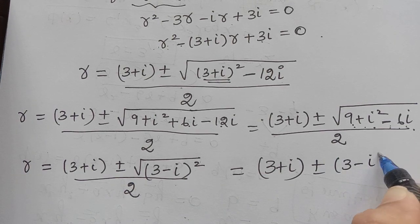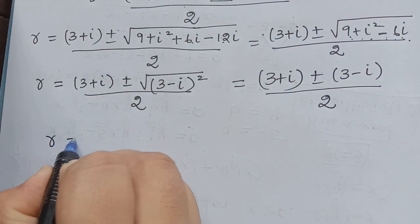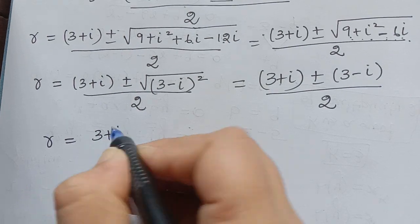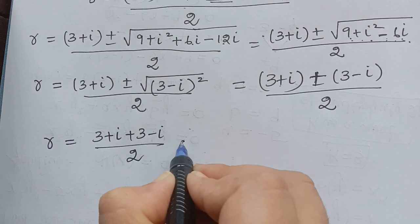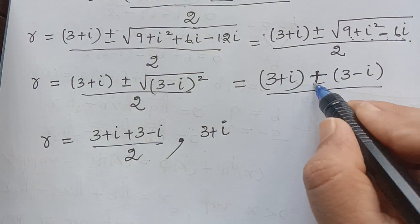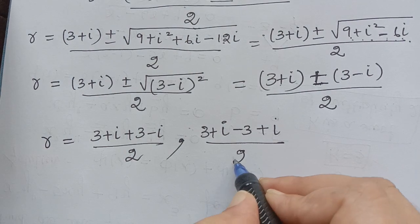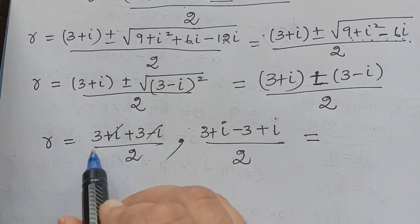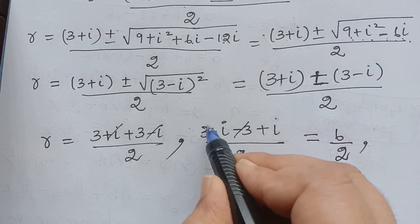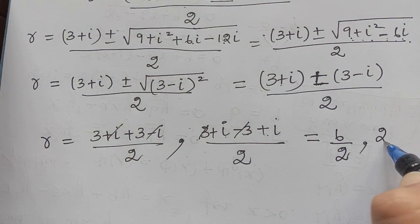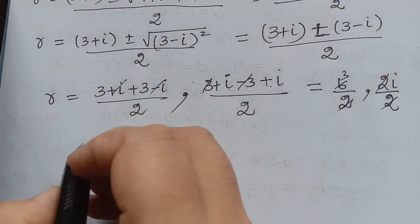Since the square root and square cancel, we get r equals (3 plus i) plus or minus (3 minus i), divided by 2. Taking the positive case: (3 plus i plus 3 minus i) divided by 2 equals 6 divided by 2 equals 3. Taking the negative case: (3 plus i minus 3 plus i) divided by 2 equals 2i divided by 2 equals i.